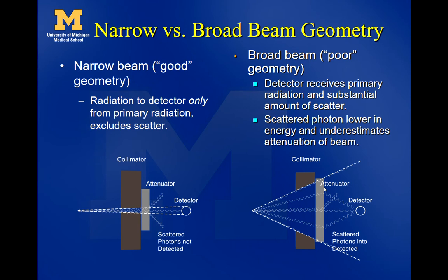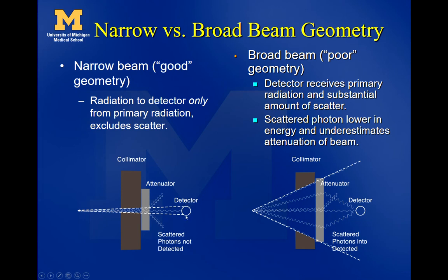We call the narrow beam the 'good geometry' and the broad beam the 'poor geometry' — not meaning one is good and one is bad, but describing the setup. In this situation we have an x-ray beam, an x-ray detector, and an attenuator — a slab of lead inside the medium with everything else being air. Under narrow beam geometry, the jaws of the machine are set very narrow, so only a small part of the beam interacts with the attenuator, and scattered secondary x-rays are deflected away from the detector and won't be measured.